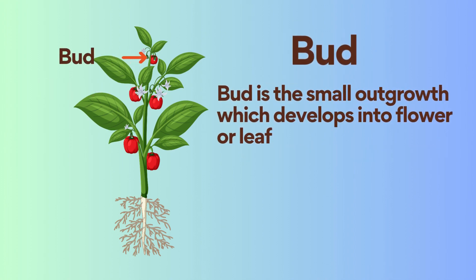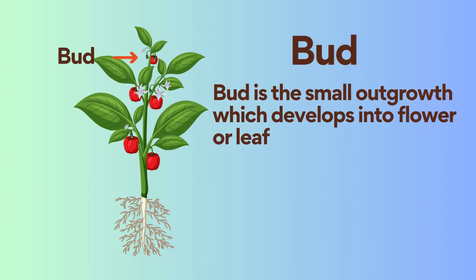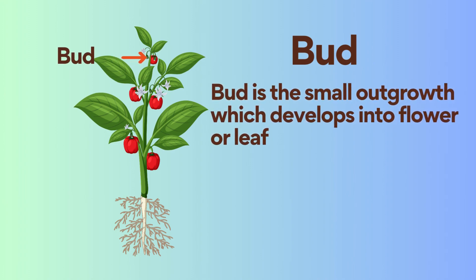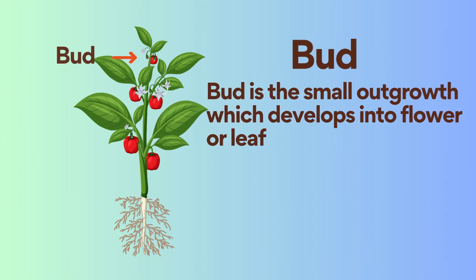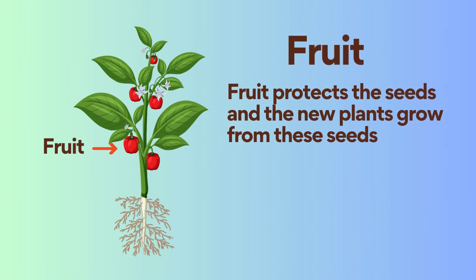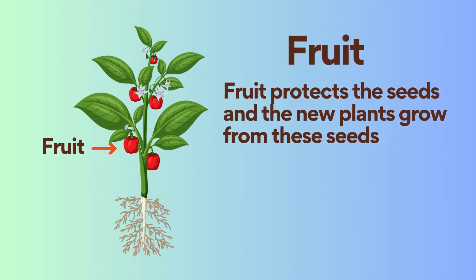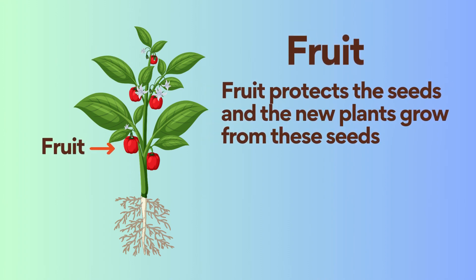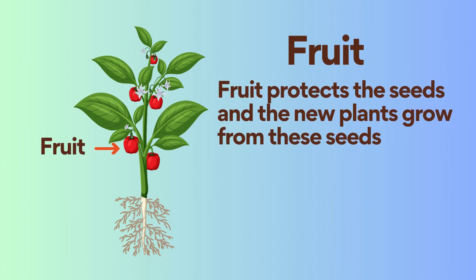Bud is the small outgrowth which develops into a flower or leaf. Fruit protects the seeds, and new plants grow from these seeds.